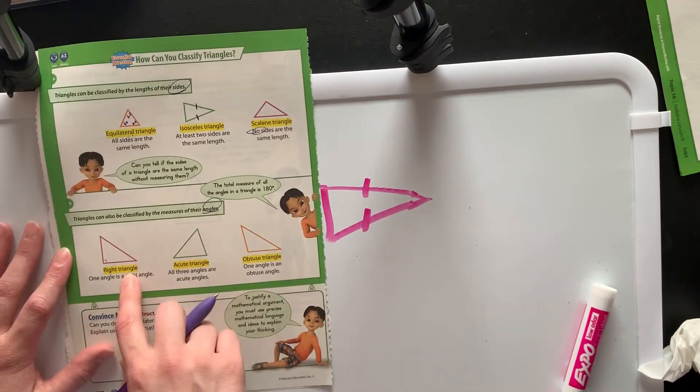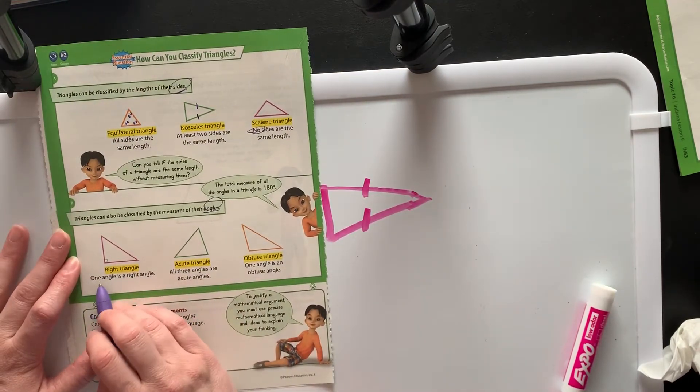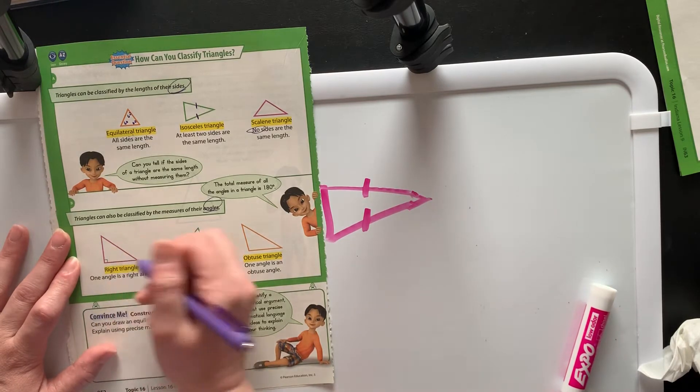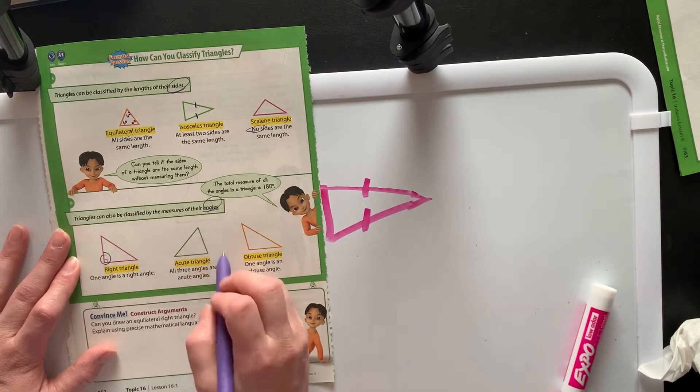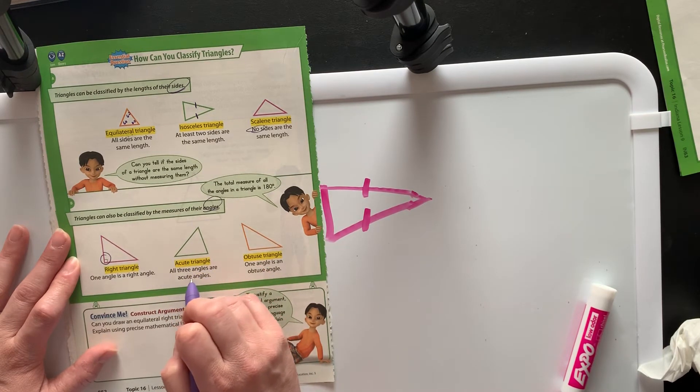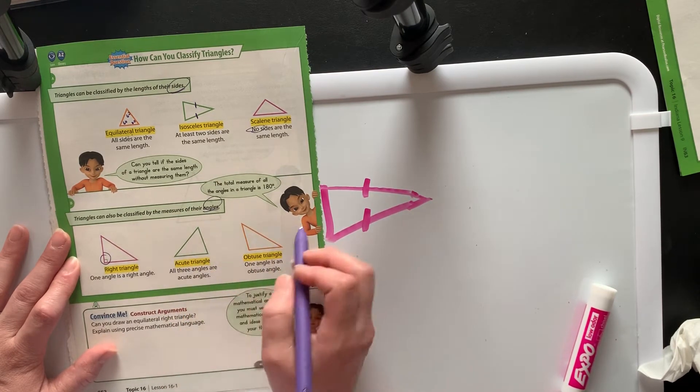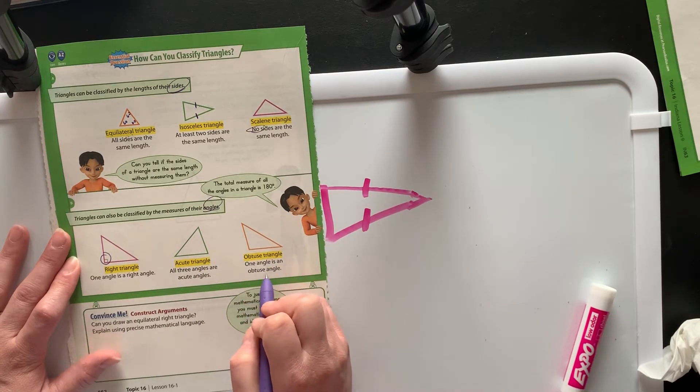And then the angles, we have a right triangle where one angle is a right angle, so like right here. And acute has three angles that are acute. And obtuse has one angle that is obtuse.